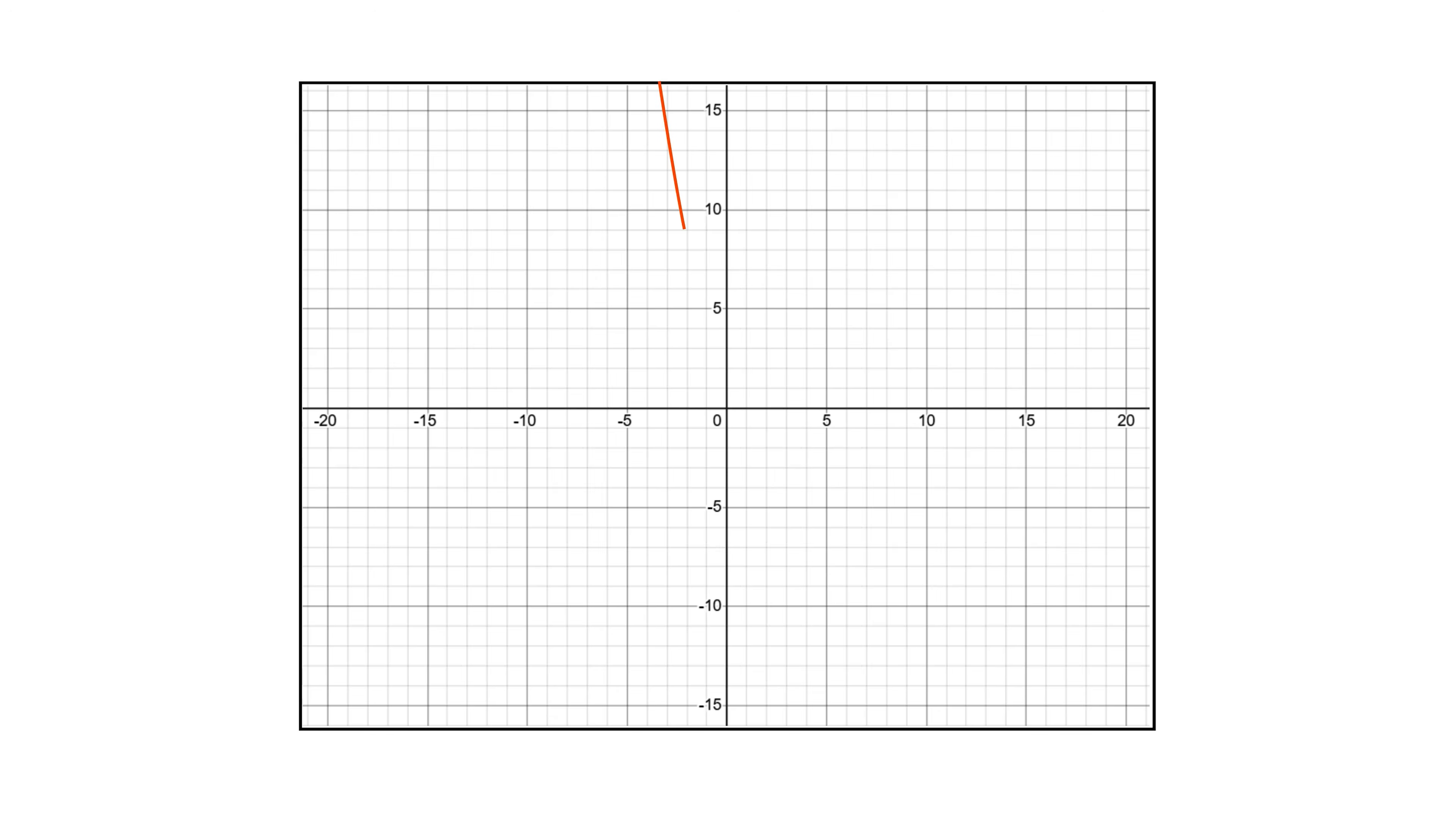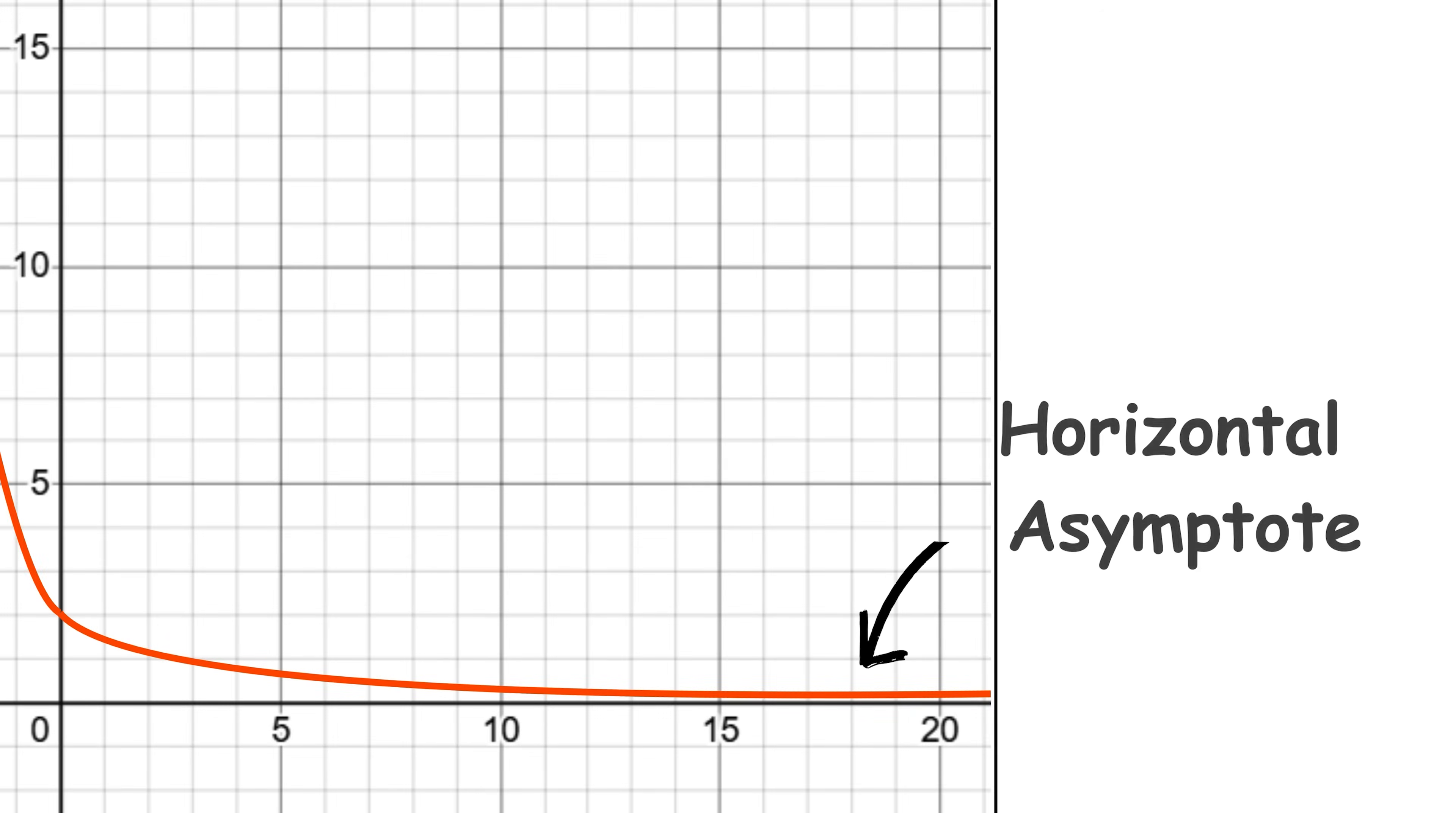If a is between 0 and 1, it decreases. Its graph approaches the x-axis, but never touches it, forming a horizontal asymptote.